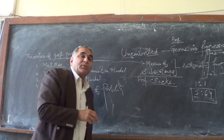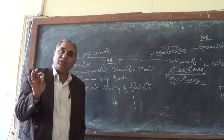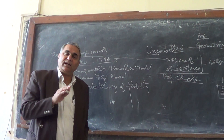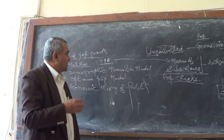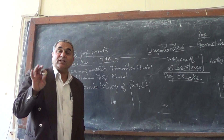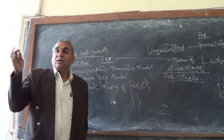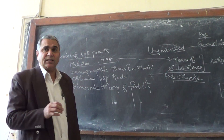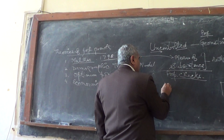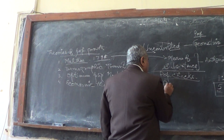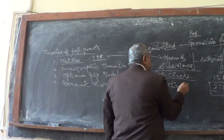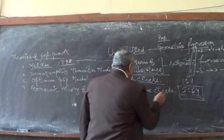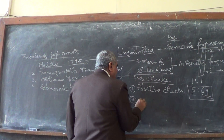Because this was the time when the Industrial Revolution had started, but technology had limited access. By that time, there were no sterilization procedures or contraceptives. So Malthus said, there are two types of checks: positive checks and preventive checks.